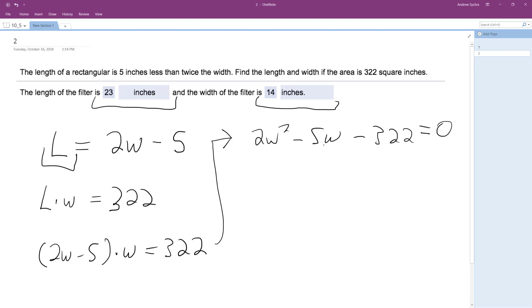And then what I end up with, so if I run this and I factor everything, I end up with 2W plus 23 times W minus 14.